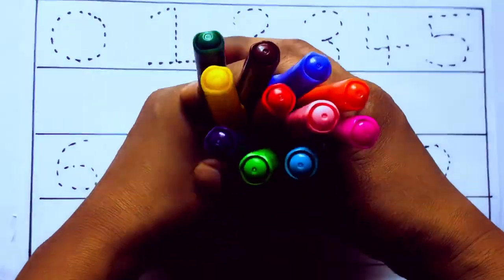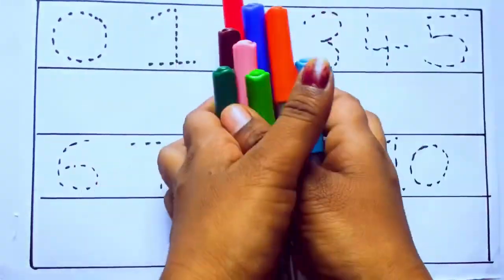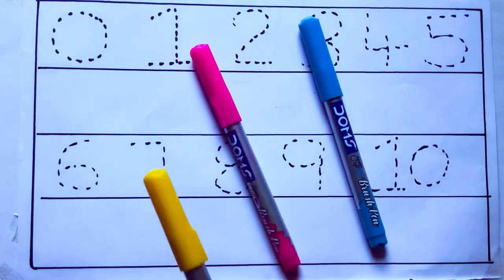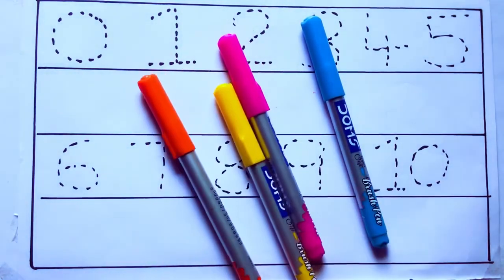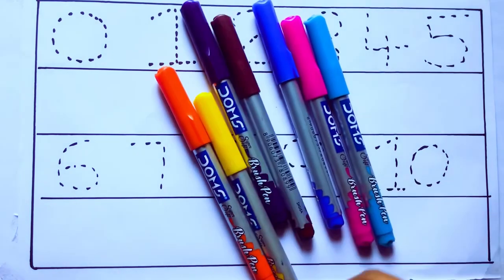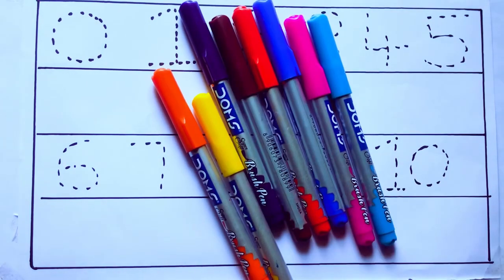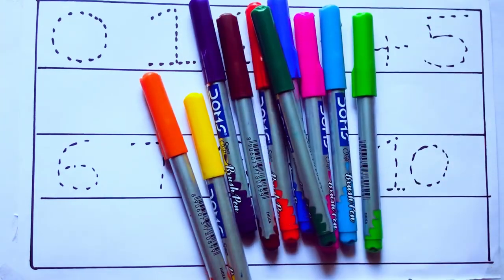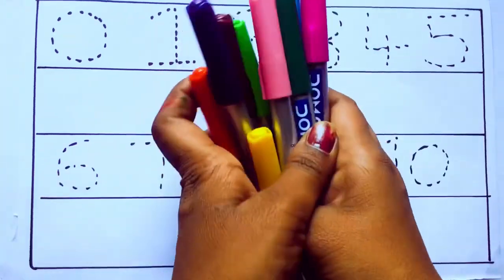Let's learn some colors. These are all the color pencils. Let's learn the names. Sky blue color, pink color, yellow color, orange color, violet color, blue color, brown color, red color, green color, and pink color.